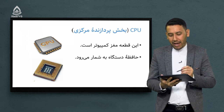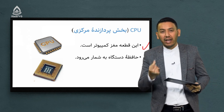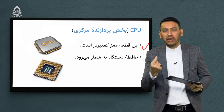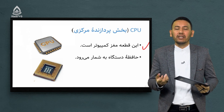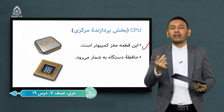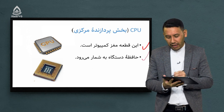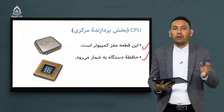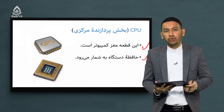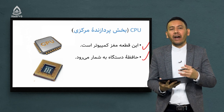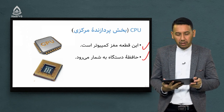این قطعه مغز کامپیوتر است. همانطور که یک انسان مهمترین بخش وجودی‌اش در حوزه تفکر و عقل، مغز انسان است، اگر یک دستگاه کامپیوتر را در نظر بگیریم مهمترین بخشش مغز کامپیوتر است و همچنین حافظه است که میتواند تمام اطلاعات موجود در کامپیوتر - اطلاعات ورودی که شما میدهید و اطلاعات خروجی که از کامپیوتر به شما داده میشود - همه را نگه میدارد و هر زمان بخواهید بازیابی کنید.